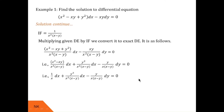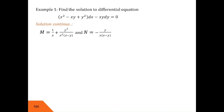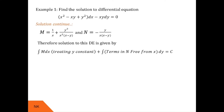This is now a differential equation of the type M dx plus N dy equals 0. Comparing, we get M equal to 1/x + y²/[x²(x−y)] and N as −y/[x(x−y)]. We find the solution using the formula: integration of M dx plus integration of terms in N free from x, dy equals c. Substituting for M, and since there is no term in N free from x, we take 0 for the second term.